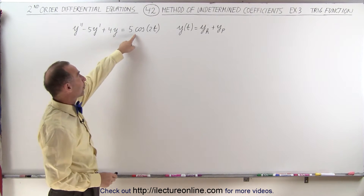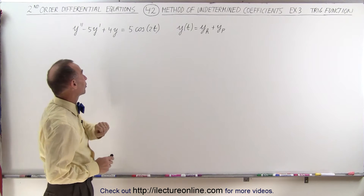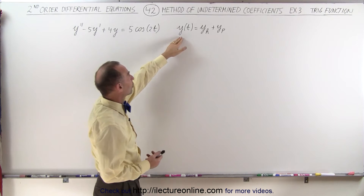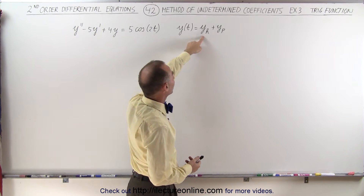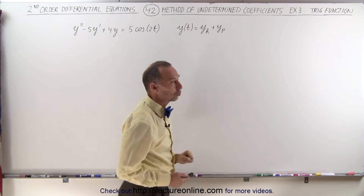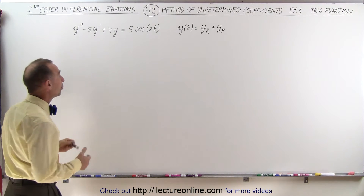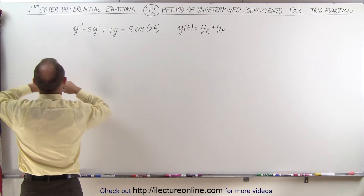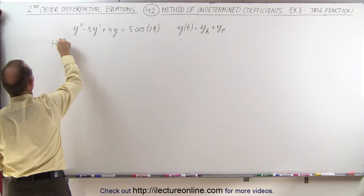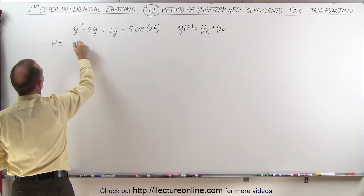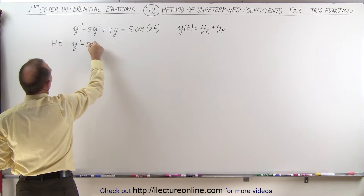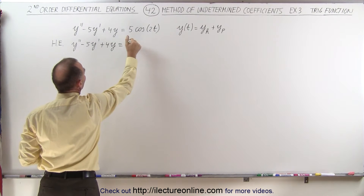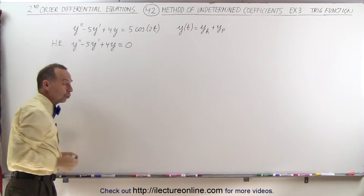In this case, the function on the right side of the equation is a trigonometric function. We know that the solution is going to be the sum of the homogeneous part of the solution plus the particular solution. We start by getting the homogeneous part by turning this into a homogeneous equation: y double prime minus 5y prime plus 4y equals 0. We simply replace the right side by 0 and find the solution to that.